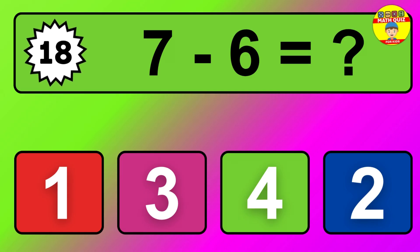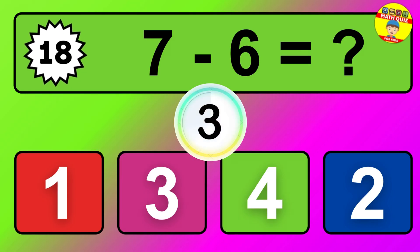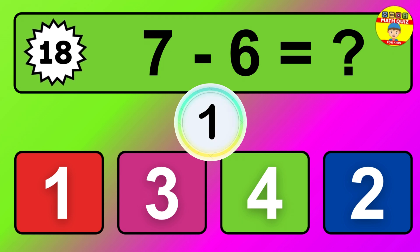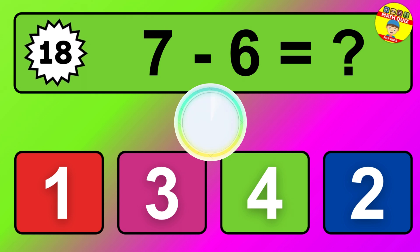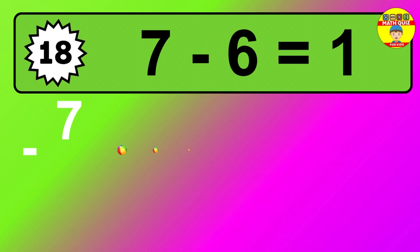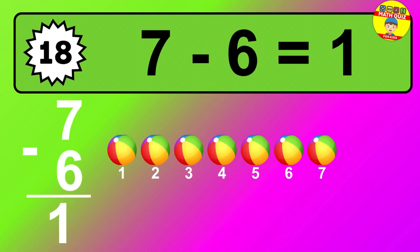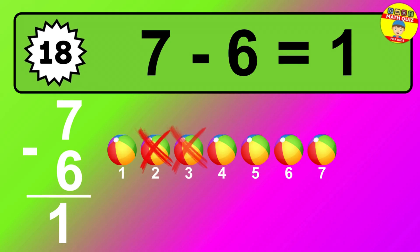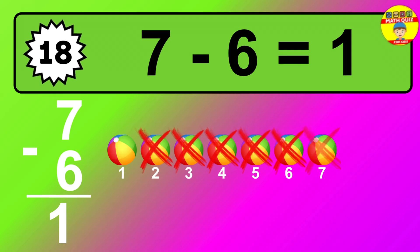Question 18. 7 minus 6 equals what? The answer is 7 minus 6 is 1. Let's count it: 1.